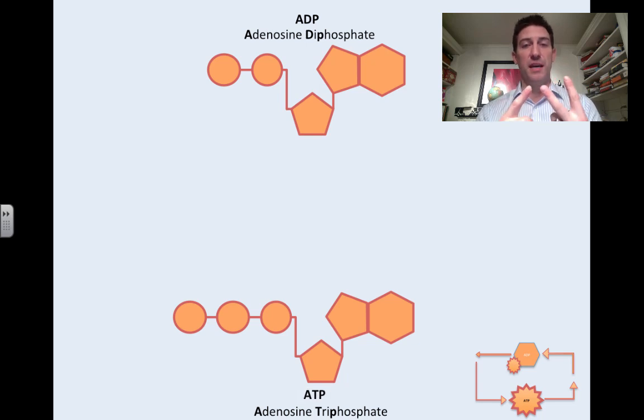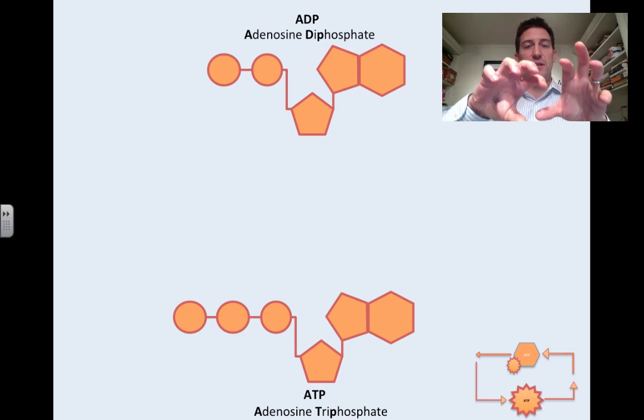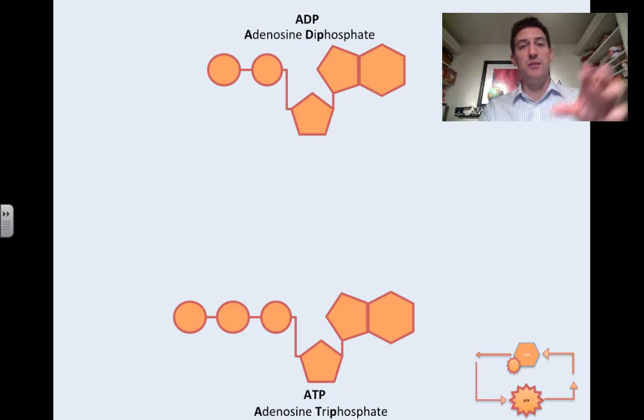That last phosphate group on the end there causes this molecule to have high energy. So every time we break that phosphate off, energy is released into the system, and then we need energy to reattach it. So every time we break it off, energy is released, then we need to find some energy to reattach that, on and on.